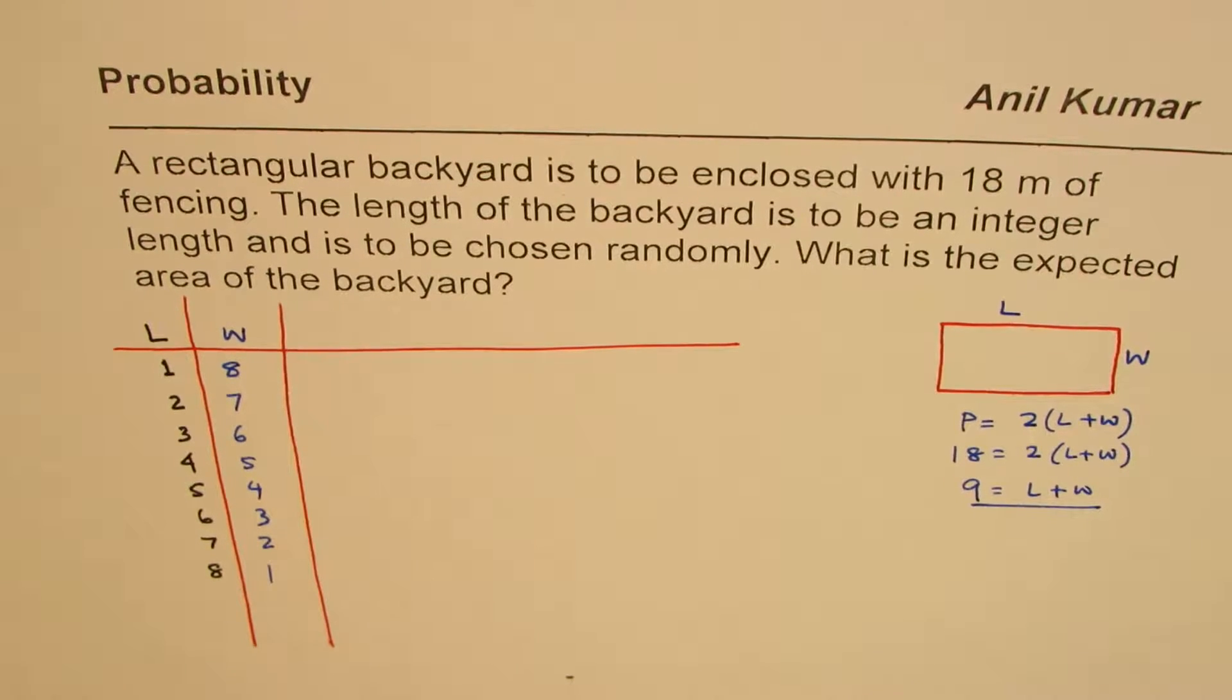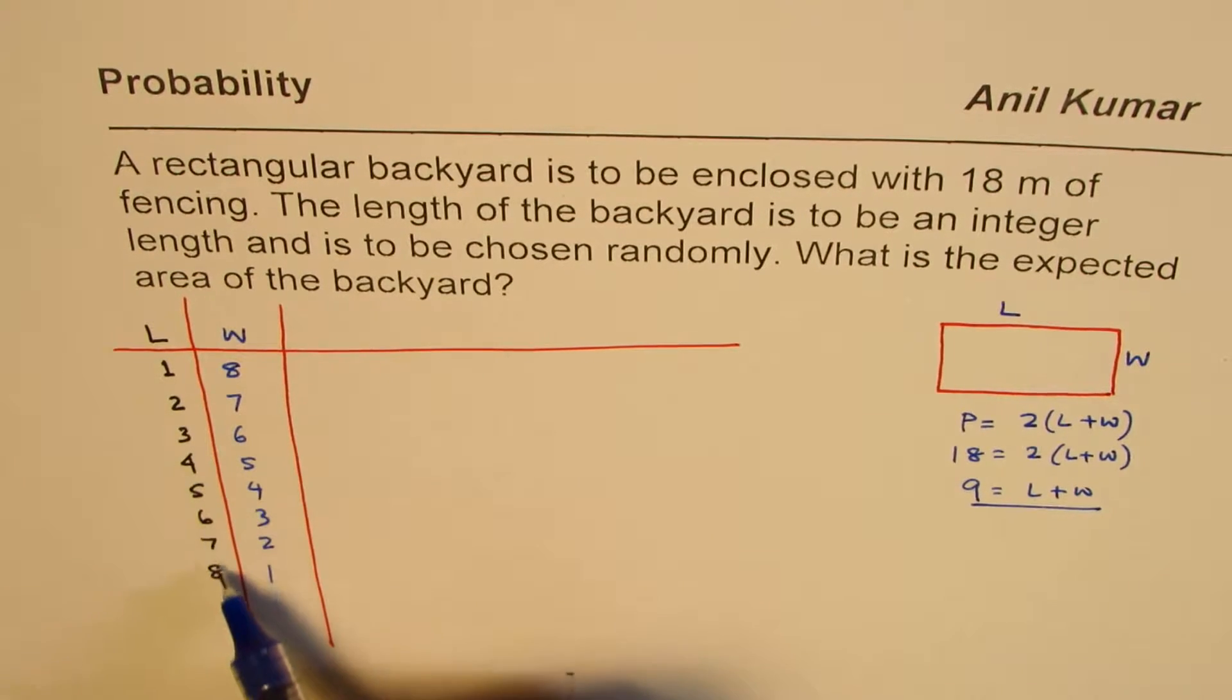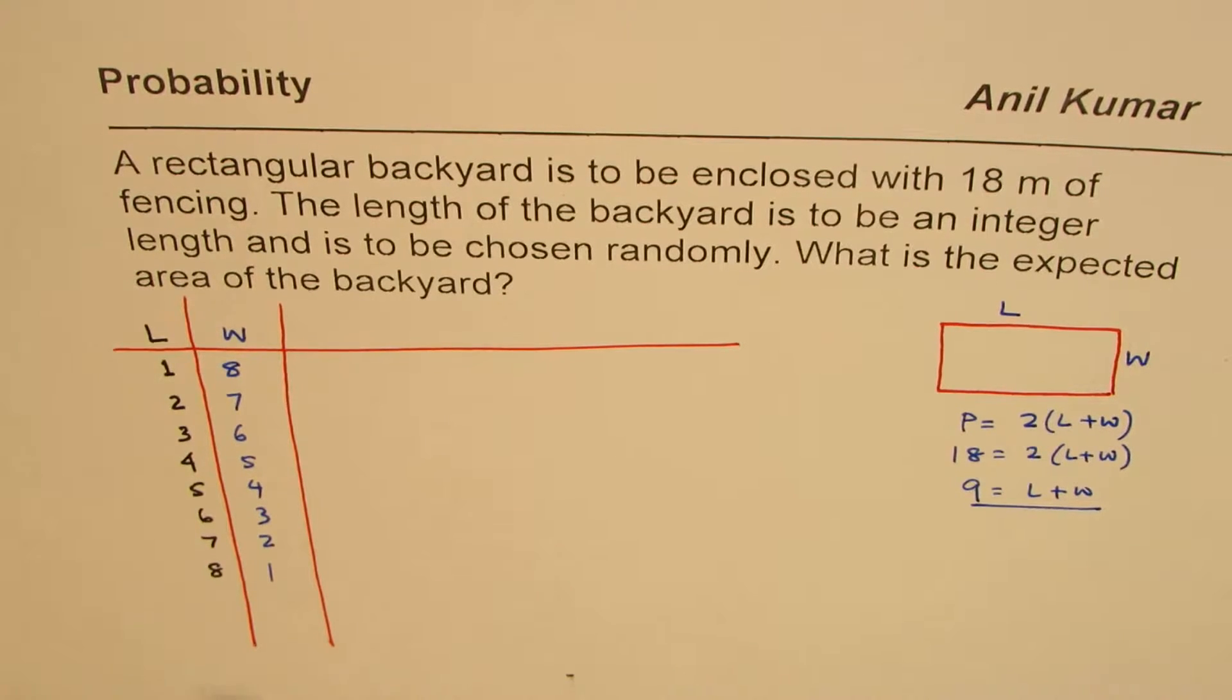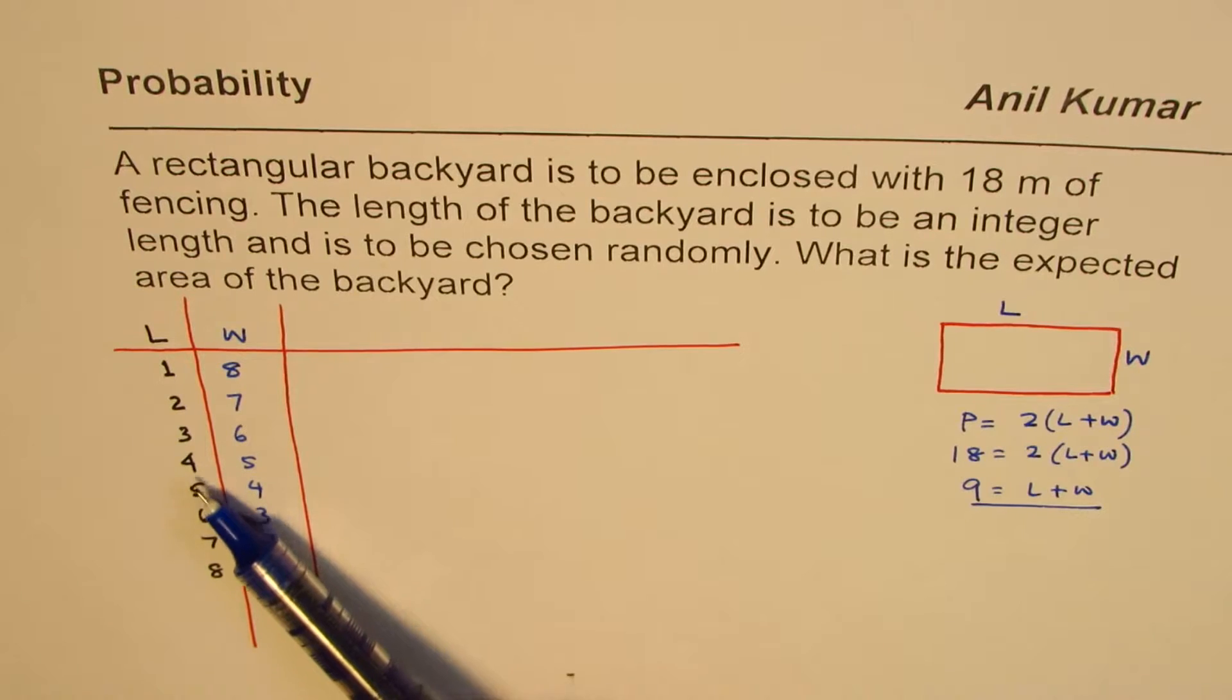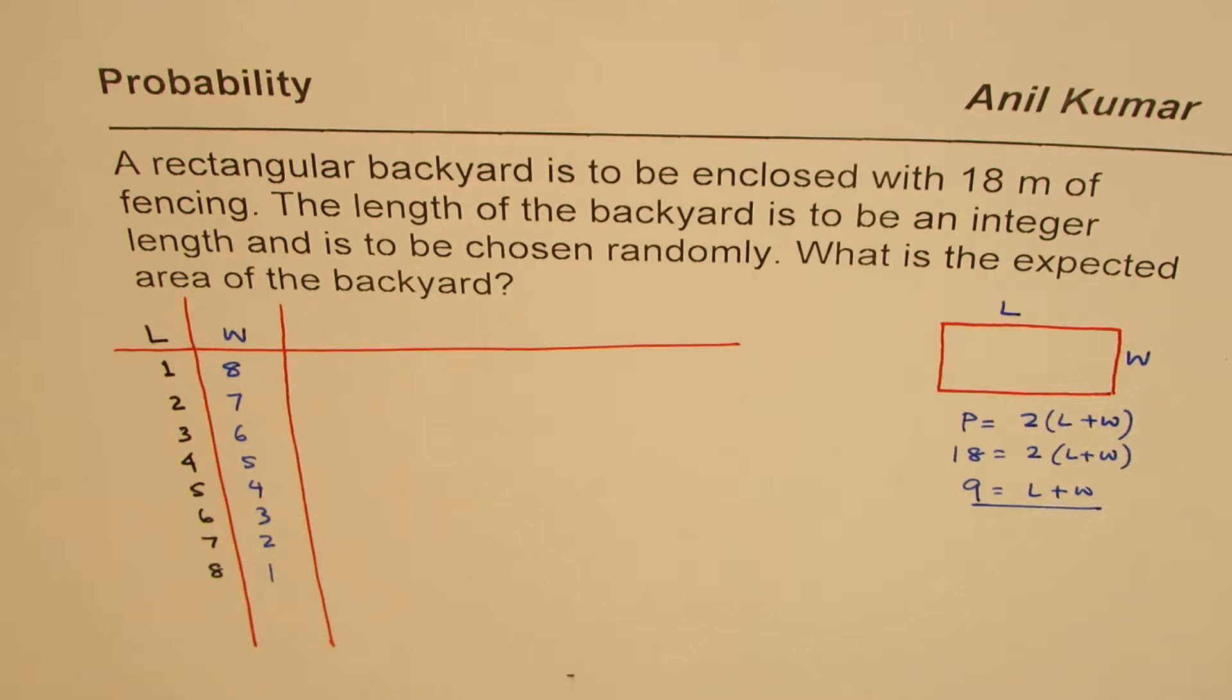Now in this particular case, each value of length is kind of unique. So total probability is 1, 2, 3, 4, 5, 6, 7, 8. So 1 over 8 is the probability for each.